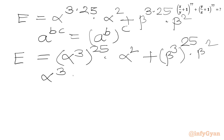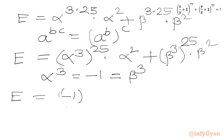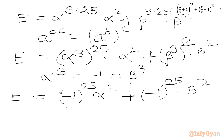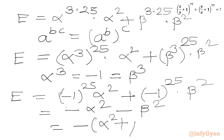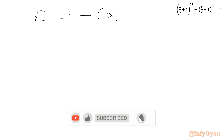We have alpha³ = -1 and beta³ = -1. Plugging in: E = (-1)^25 * alpha² + (-1)^25 * beta². Since -1 raised to an odd power is -1, we get E = -alpha² - beta² = -(alpha² + beta²).